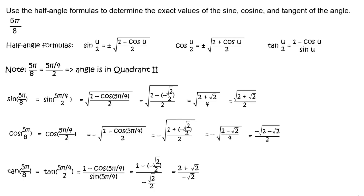Multiply the fraction by two halves to simplify to get (2 plus √2) divided by negative √2. Rationalize the denominator by multiplying by √2/√2. Multiply and simplify to get (2√2 plus 2) divided by negative 2. Reduce to get (√2 plus 1) divided by negative 1, which simplifies to negative √2 minus 1, rewritten as negative 1 minus √2.